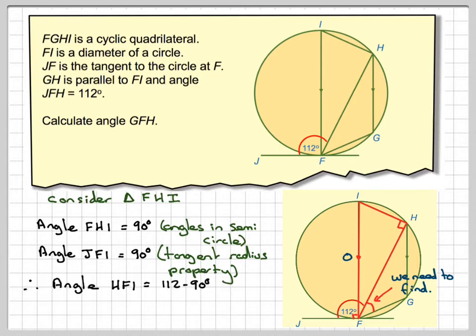Angle HFI, which is going to be 112, because all of this angle here is 112, and we just said that this is worth 90. So 112 minus 90, which is 22.